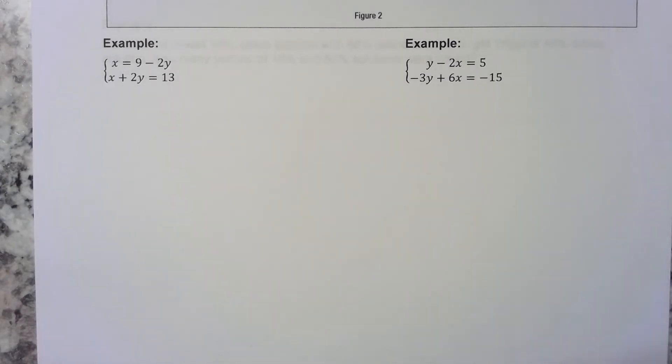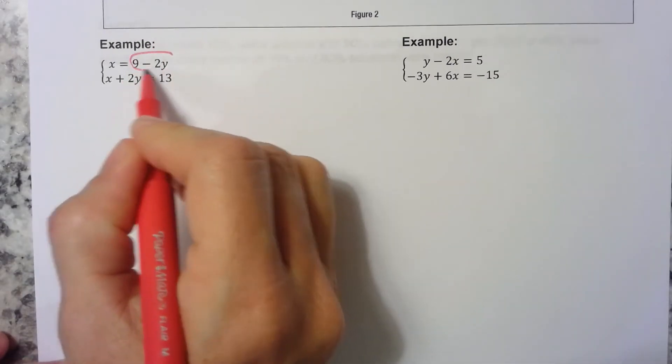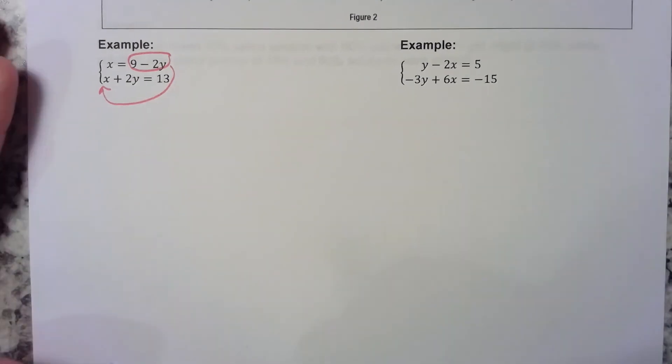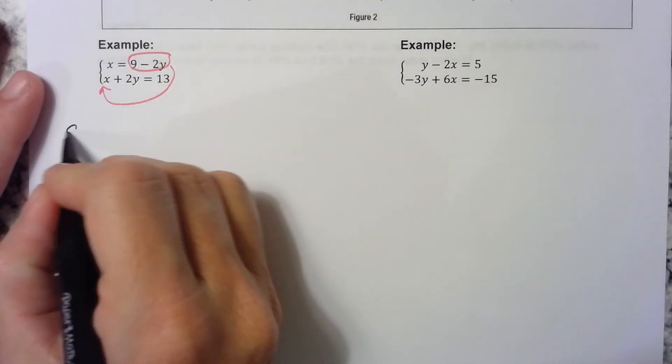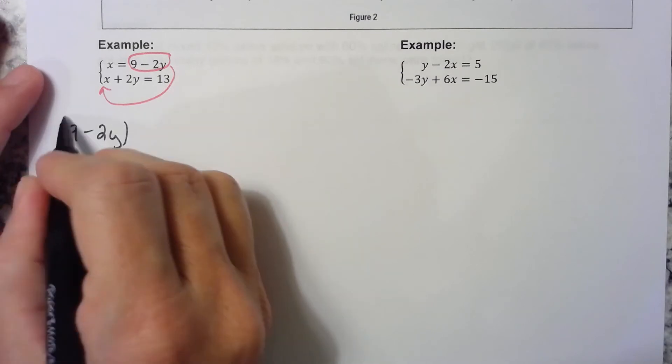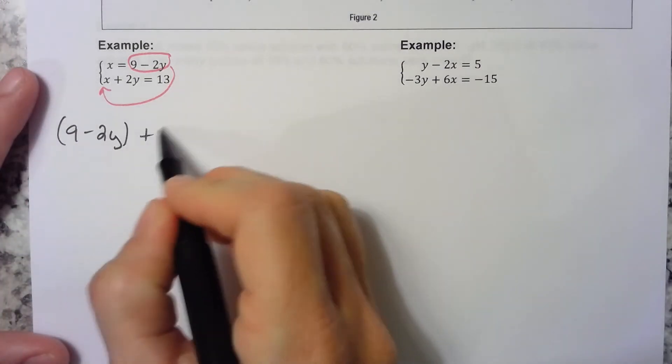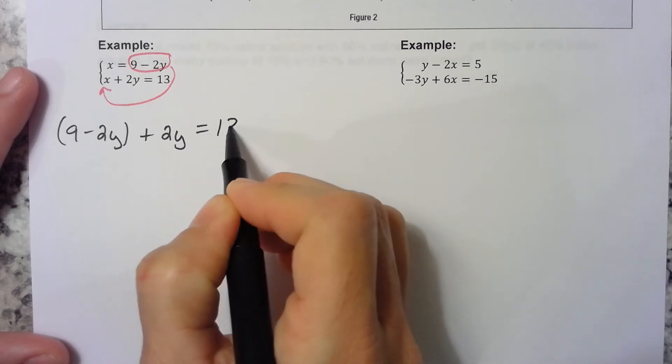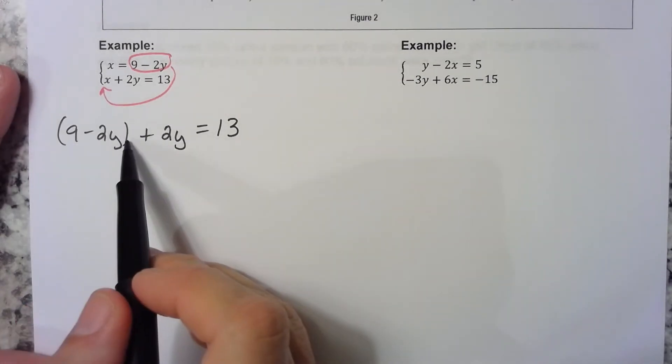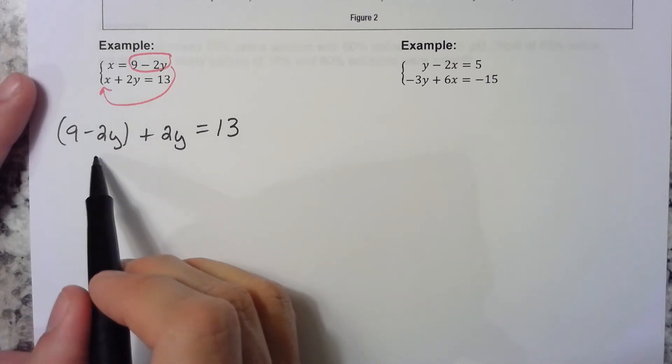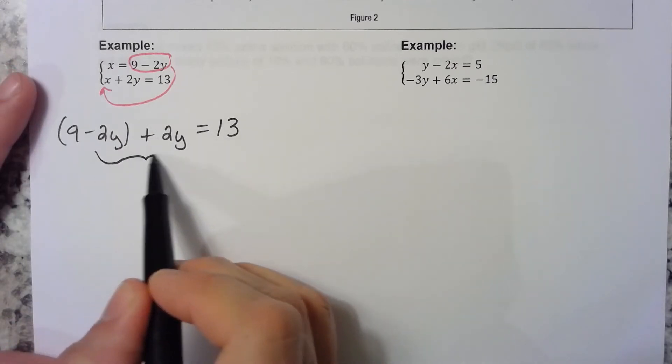We can take all of this and substitute it in for x right there. So we're going to have 9 minus 2y, that's our x value, plus 2y equals 13. Well do I really need these parentheses? We're just adding all this together, right? So we really don't need them. So let's go ahead and add. Negative 2y plus 2y is 0, so we get 9 equals 13.